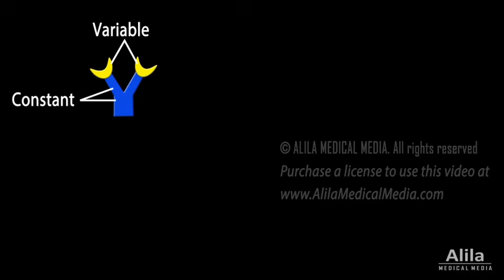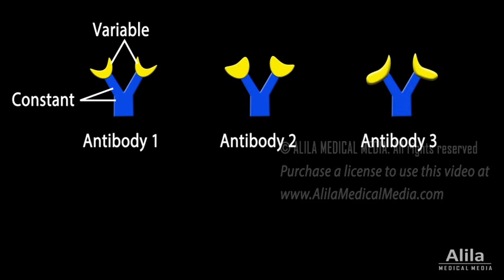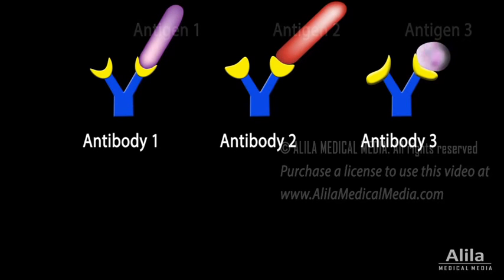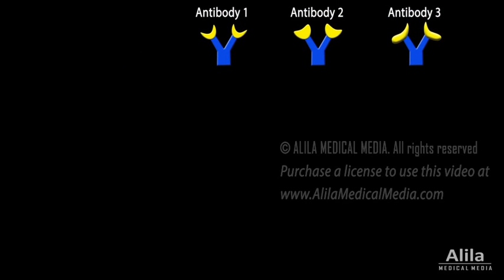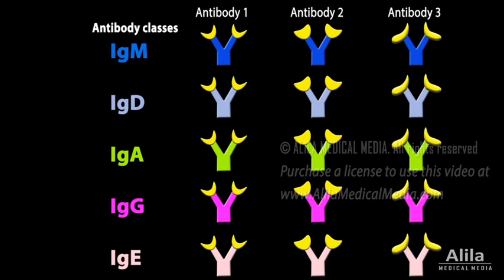An antibody is basically a protein whose structure consists of variable and constant regions. The variable regions give the antibody its uniqueness, much like the bit, or blade, of a key. This is where it binds to a specific antigen, which is the lock. There are several classes of antibodies, differing in their constant regions. Different antibody classes engage different mechanisms to neutralize the antigen.